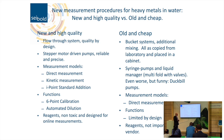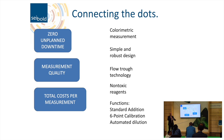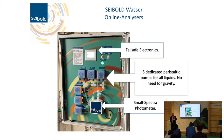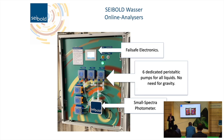Now, connecting the dots: we have discussed the three main criteria — zero unplanned downtime, measurement quality, and total cost per measurement. We have colorimetric measurement, the flow-through technology, and a simple and robust design. The analyzer consists of three parts: failsafe electronics, six dedicated peristaltic pumps for all liquids (no need for gravity), and a small spectrophotometer. It's a simple setup — you check if there is power, if pumps are turning, and if the photometer gives light. Everyone can easily verify if the analyzer is measuring correctly.